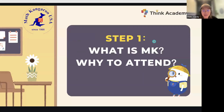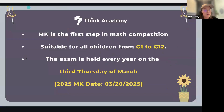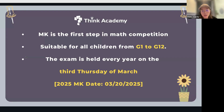Let's level up. First, let's talk about what is Math Kangaroo and why we should be attending for our child. Math Kangaroo is the first step into math competition. It is a suitable competition for children from grade one all the way to grade 12. Not many competitions allow younger kids to attend — Math Kangaroo is one that starts from grade one. This competition is held every year on the third Thursday of March. In 2025, the Math Kangaroo date is March 20th, 2025 — a Thursday, middle of the week. Mark your calendar.